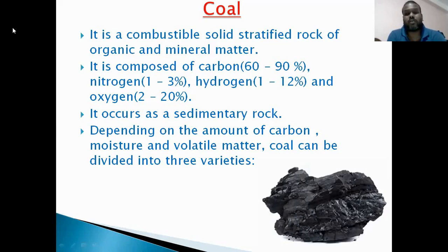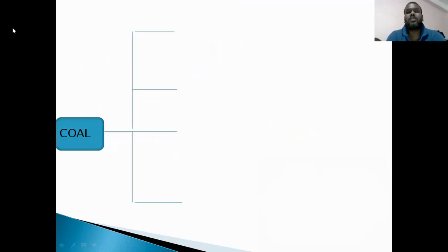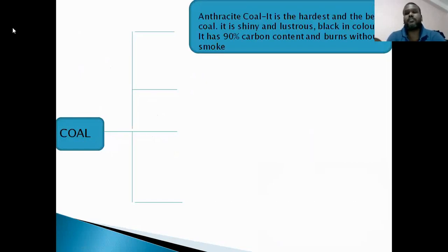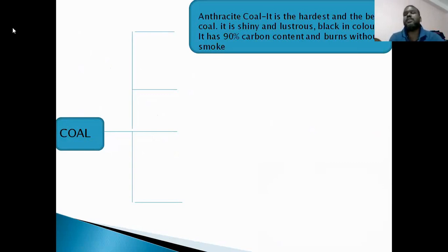Depending on the amount of carbon, moisture, and volatile matter, coal can be divided into three varieties. Number one: Anthracite. It is the hardest and best quality of coal. It is shiny and lustrous, and looks black in color.